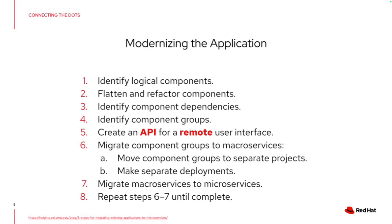There's a series of steps we can follow to get into the path of modernization. You need to get your hands into your monolith or previous application, identify logical components, and start to flatten or refactor those components. You need to check the component dependencies — make a graph to identify who's calling who, who's depending on who. The next step is to group those components, separating them into a mind map of relationships and trees. Then, importantly, create an API for a remote interface — this step is very important and sometimes neglected when talking about modernization of applications.